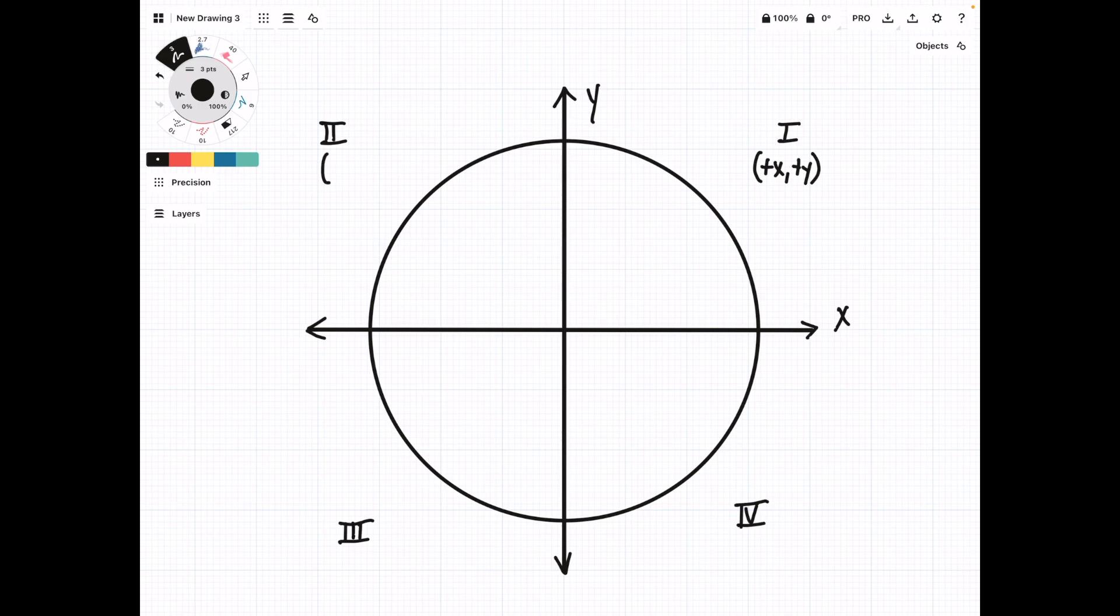Quadrant 2 has a negative x and a positive y. Quadrant 3 is a negative x and a negative y. And quadrant 4 is a positive x and a negative y.